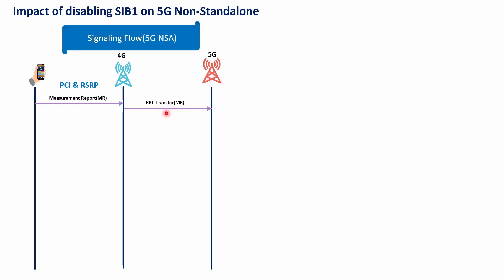One point to highlight: currently there is no direct signaling between the UE and 5G. That's why in 5G non-standalone, the majority of signaling goes through the 4G and is then transferred to 5G. However, messages like the RRC transfer or measurement report can be directly transferred from the UE to 5G if SRB3 is enabled — we can discuss that part later.